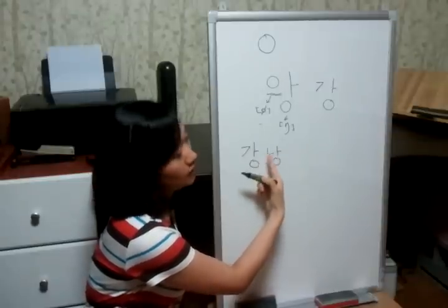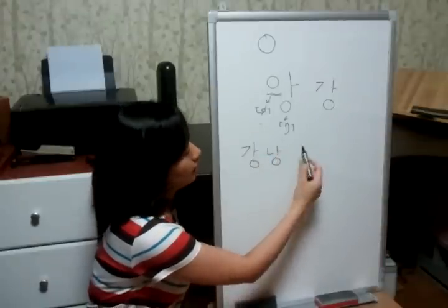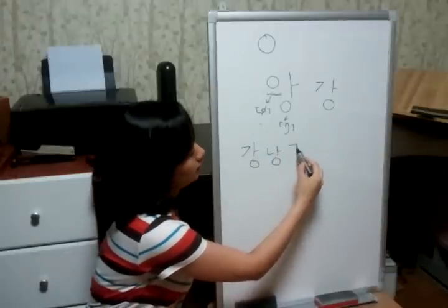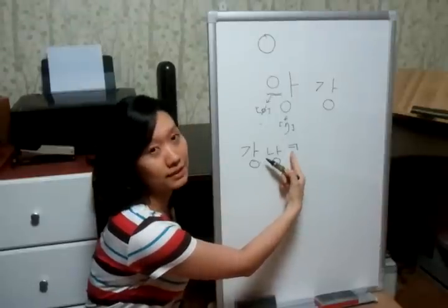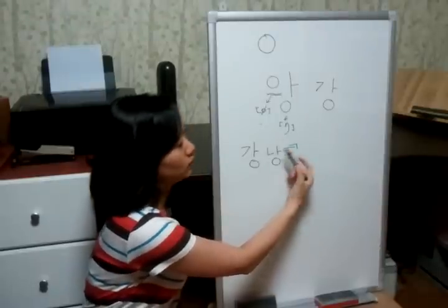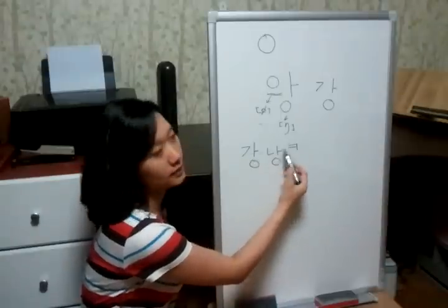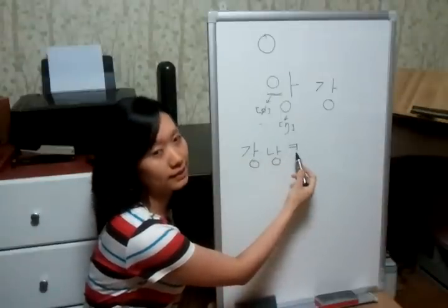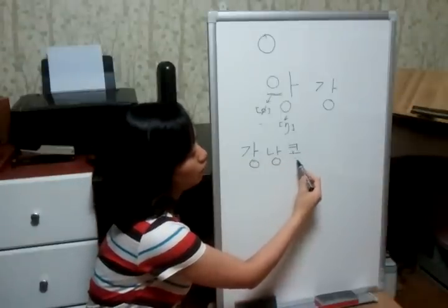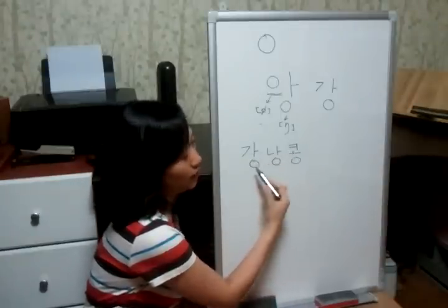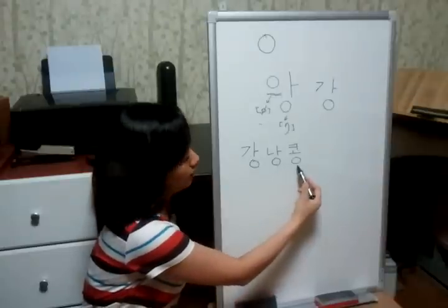ㄴ, 아, 응 — 낭. Aspirated 그 sound — so aspirated 그 sound is 크. And 오, 응 — 강, 낭, 공.